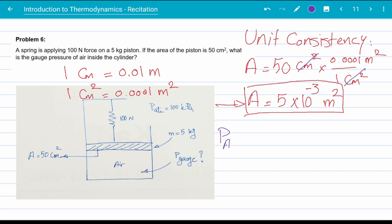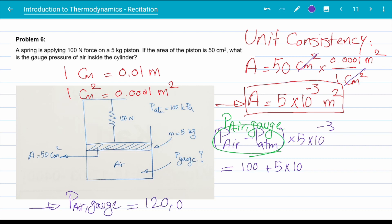We can plug in everything now in our force equation. Now we get P of air minus P atmospheric times the area is the weight plus the force of the spring. P air minus P atmospheric is actually the air gauge pressure, which is 100 plus 5 times 10 over area, which is 0.005 meters squared. We get P air gauge is 120,000 pascals or 120 kilopascals.